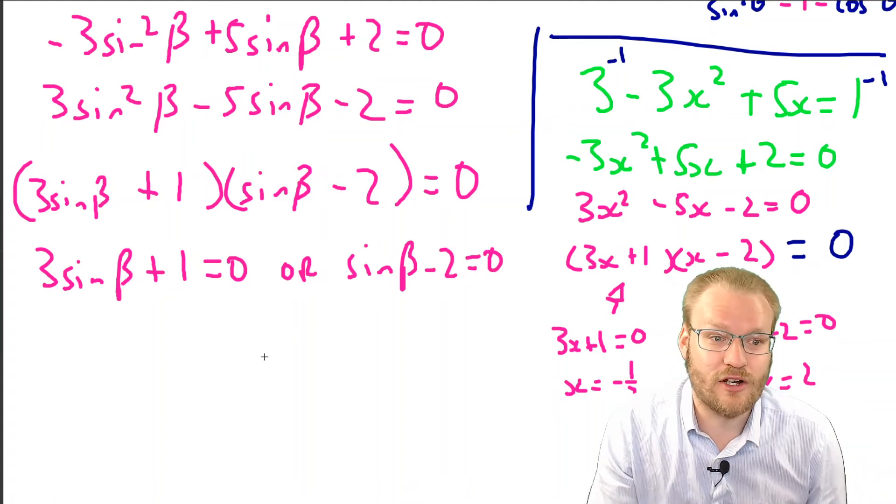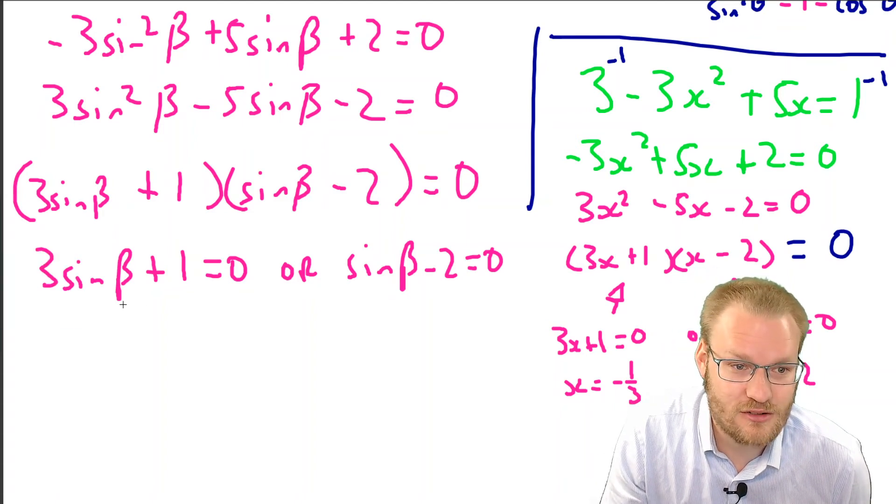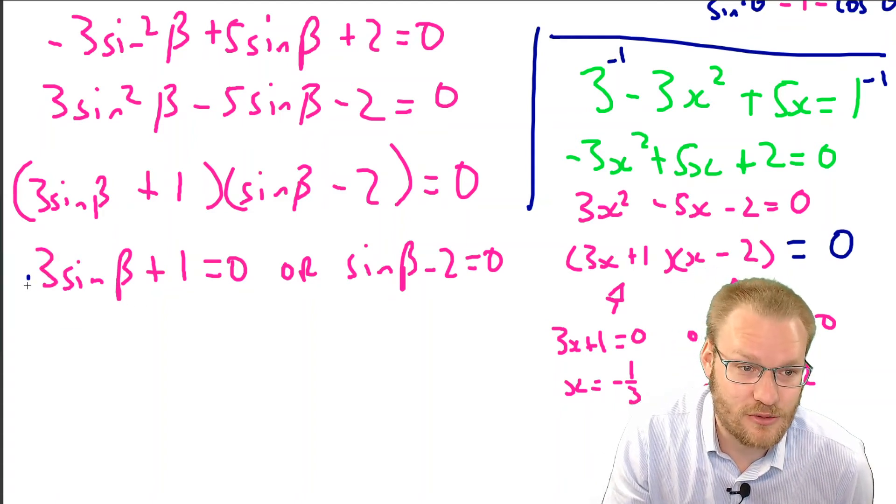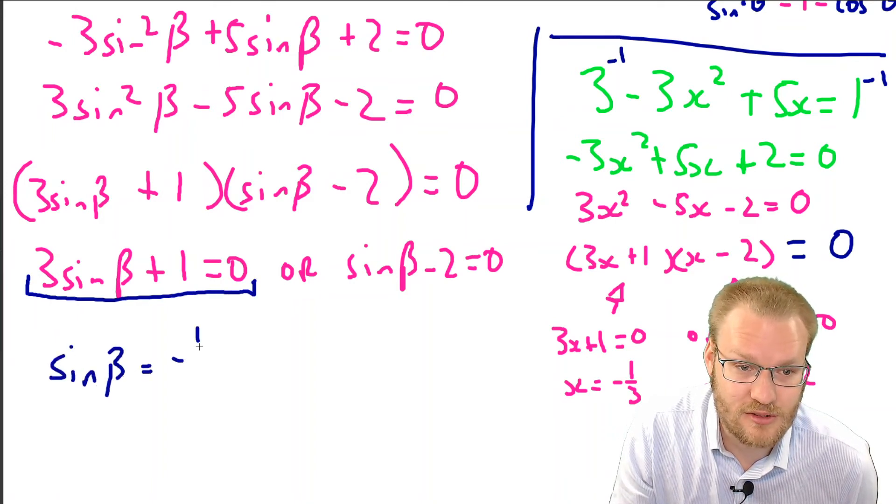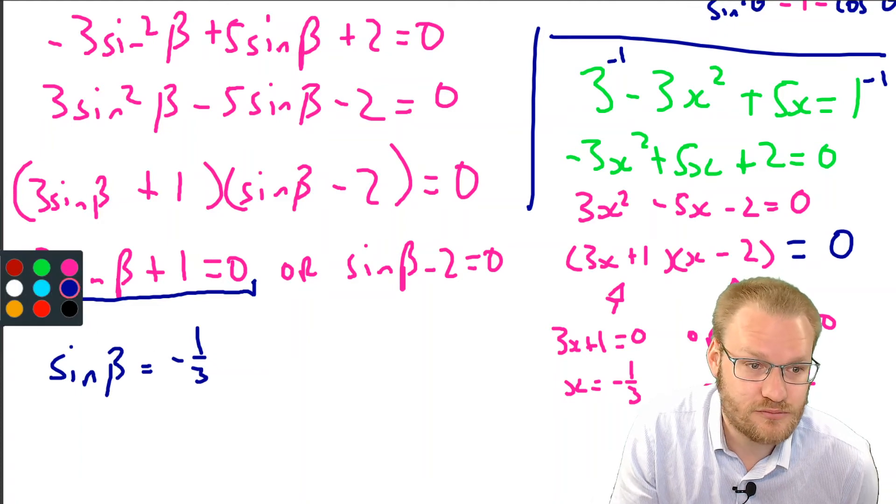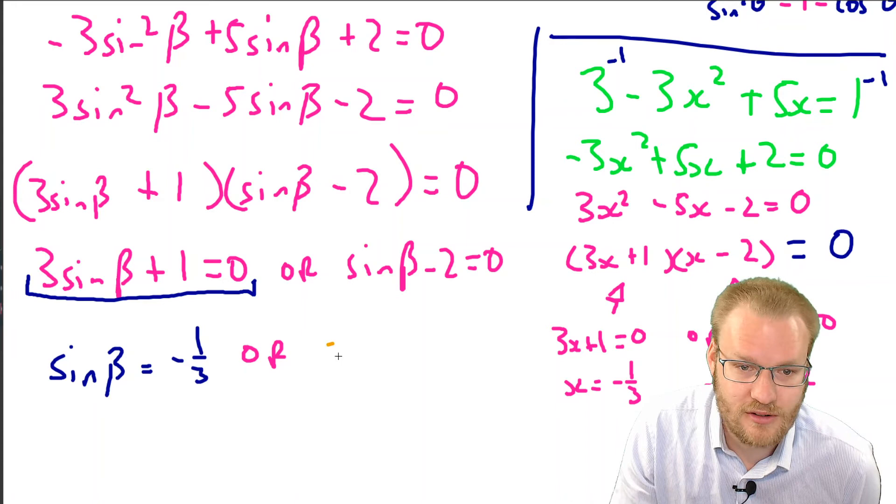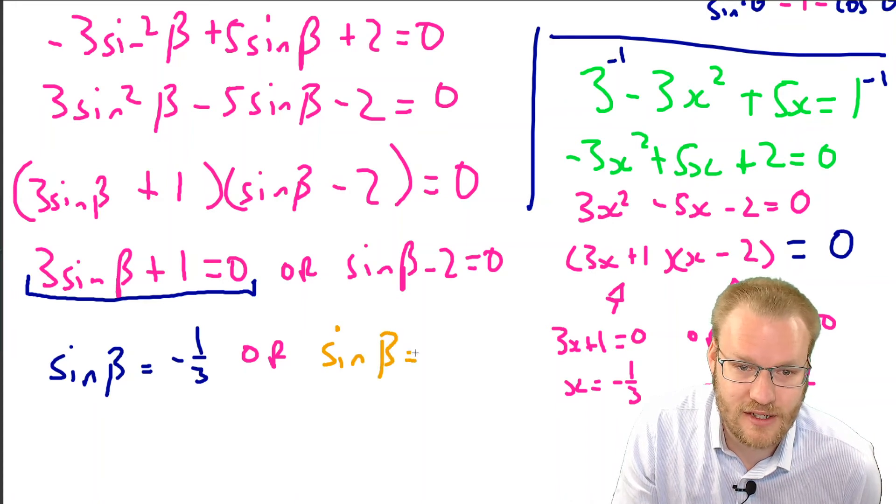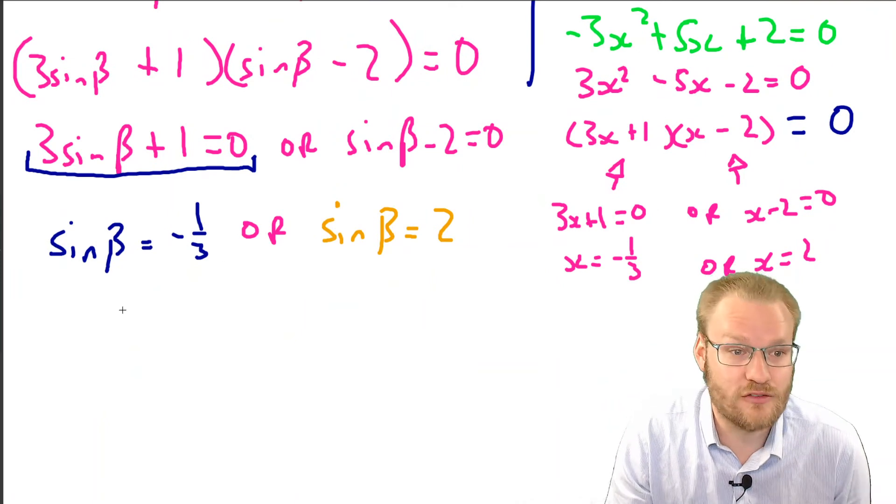Now we've got it down to something we can solve. So we've got sinβ = -1/3 or sinβ = 2. We're going to solve each of these.